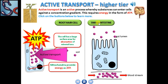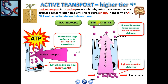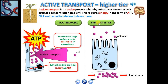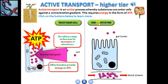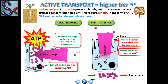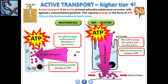In humans, active transport takes place following the digestion of food in the small intestine. Carbohydrates are broken down into simple sugars such as glucose. Notice that there is a lower concentration of glucose in the gut lumen compared to the blood. The glucose is absorbed by active transport into the bloodstream against the concentration gradient. These cells should have many mitochondria to supply ATP, and another adaptation is the many microvilli to increase surface area for absorption of digested food.